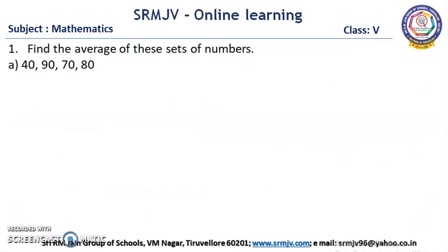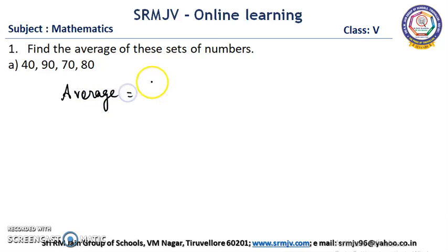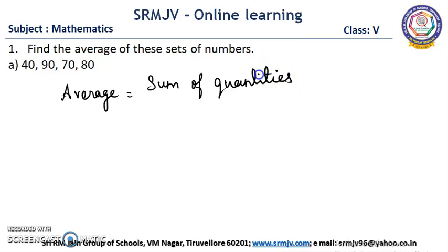First question: find the average of the set of numbers. Now we are going to find the average of the given set of numbers. To find the average, this is the formula: average is equal to sum of quantities divided by number of quantities.